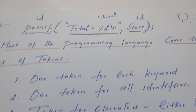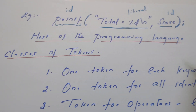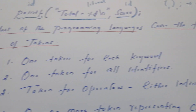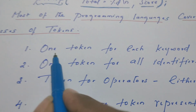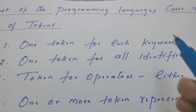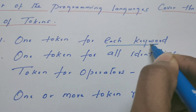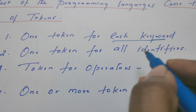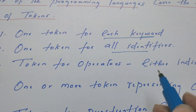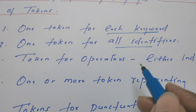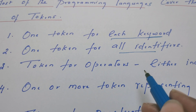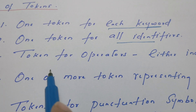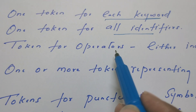In general, most programming languages cover the following classes of tokens. There might be one token for every keyword — for every keyword there is one token. There is one token for all identifiers. And there is a token for operators.